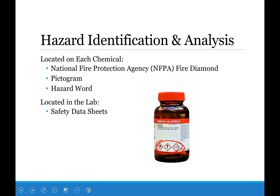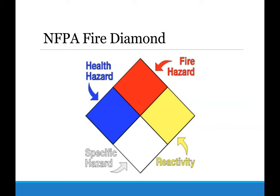Some hazard identifiers on a chemical bottle include the NFPA fire diamond, pictograms, and hazard words. The NFPA fire diamond uses colors to indicate hazards: blue is health, red is fire, yellow is reactivity, and white is any specific hazard. Each number on the diamond indicates the level of hazard — the bigger the number, the more hazardous the chemical. You will typically have to label this on your exams.